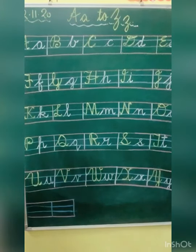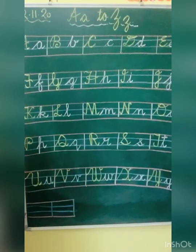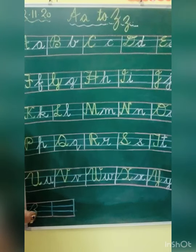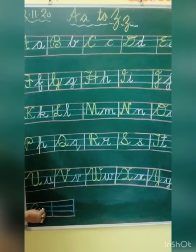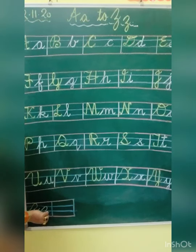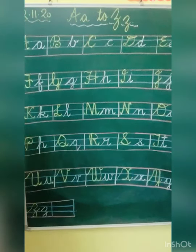Now the last letter is Z. How to make Z? Slanting line, turn, then second turn, touch the fourth line, go up, and kick. And now small Z: slanting, slanting, turn, touch the line, second curve, go up, and touch the line. This is your A to Z.